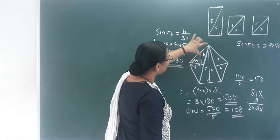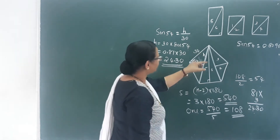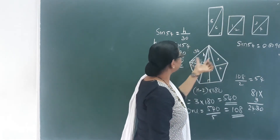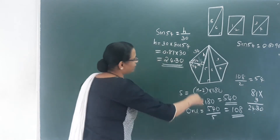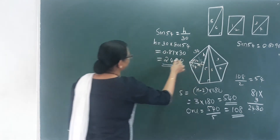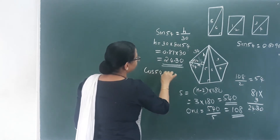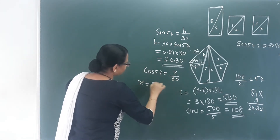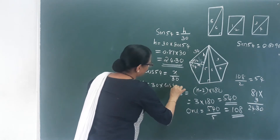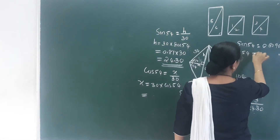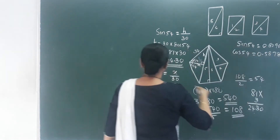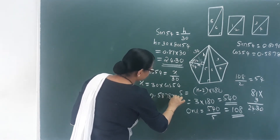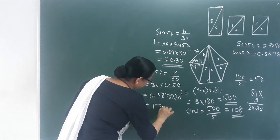So this perpendicular height h is 24.30. This is the length of the rectangle. For the adjacent side x, we use cos 54: cos 54 equals x divided by 30, so x equals 30 into cos 54. The value of cos 54 is 0.5878, so 0.5878 into 30 gives 17.63.